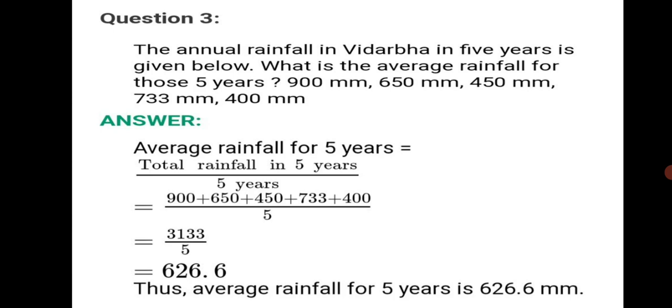Question number 3. The annual rainfall in Vidarbha in 5 years is given below. What is the average rainfall for those 5 years? Annually the rainfall is given in millimeters for 5 years: 1, 2, 3, 4, 5. Average will be addition of all these 5 years divided by 5. Average rainfall for 5 years equals total rainfall in 5 years divided by 5 years. 900 plus 650 plus 450 plus 733 plus 400 divided by 5 equals 3133 upon 5, which equals 626.6.